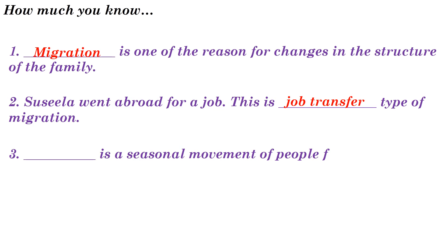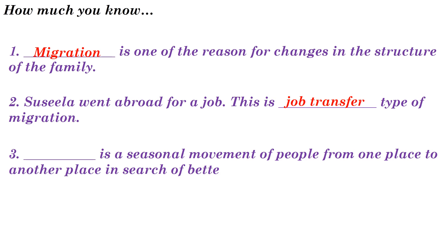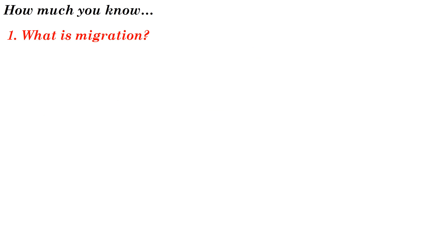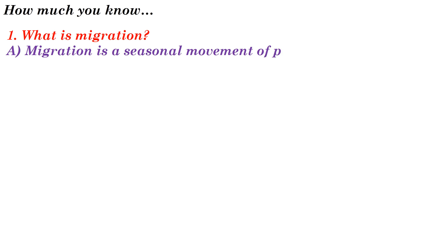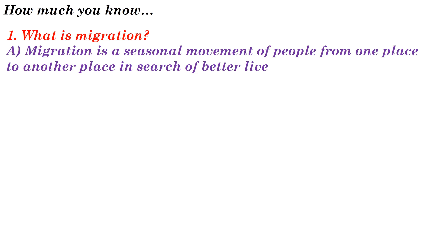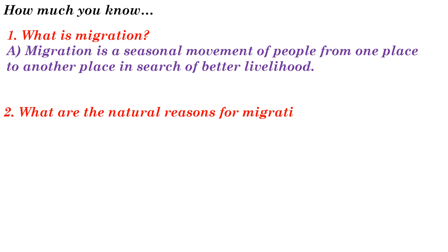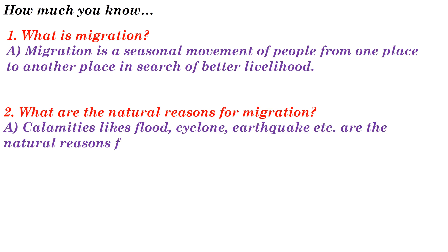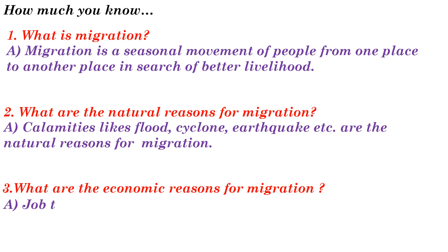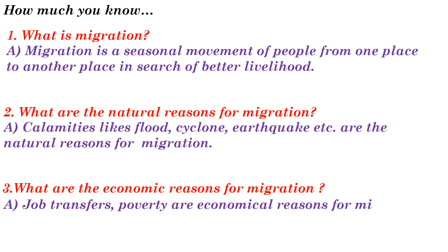Third question: Dash is a seasonal movement of people from one place to another place in search of better livelihood. Answer: Migration. Fourth question: What are the natural reasons for migration? Answer: Natural calamities like floods, cyclones, and earthquakes are the natural reasons for migration. Fifth question: What are the economic reasons for migration? Answer: Job transfers and poverty are economic reasons for migration.